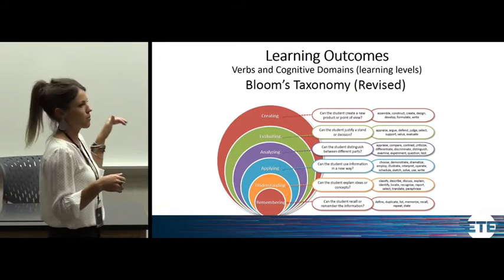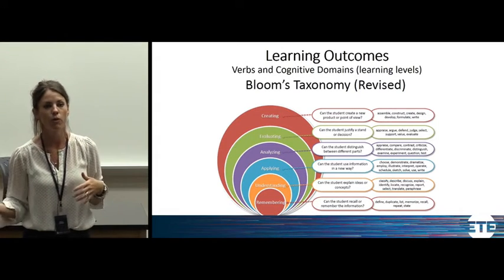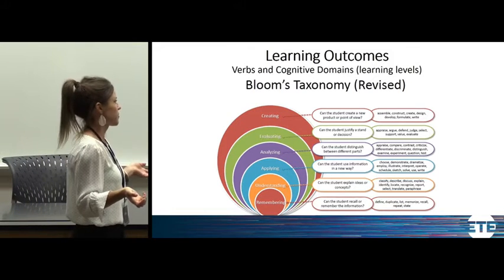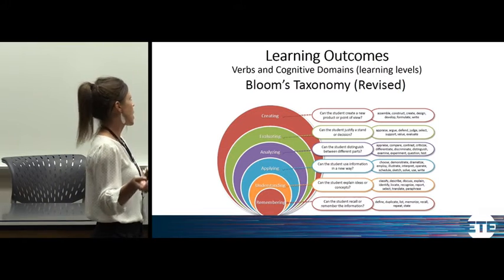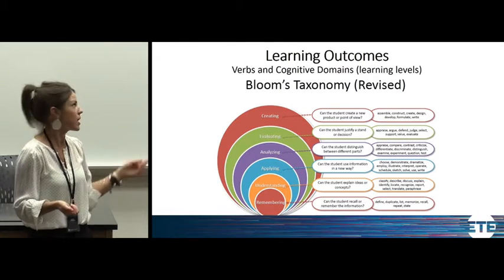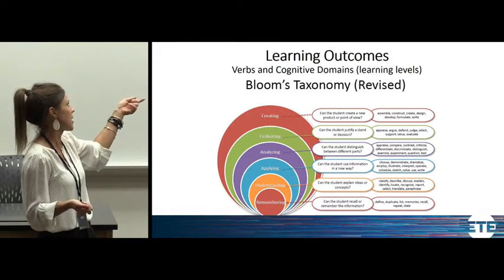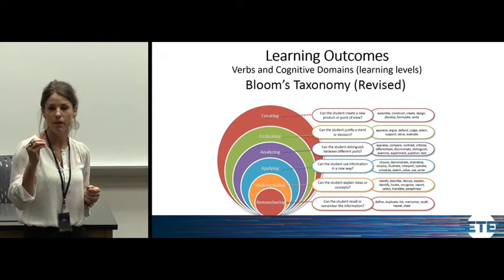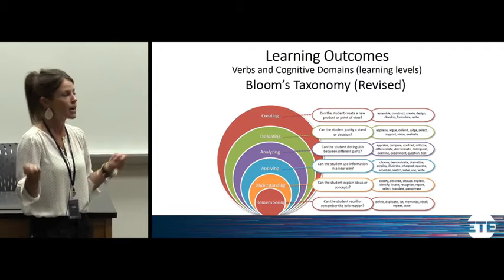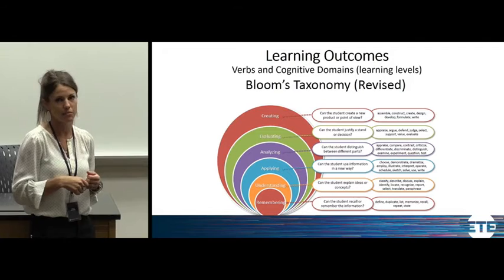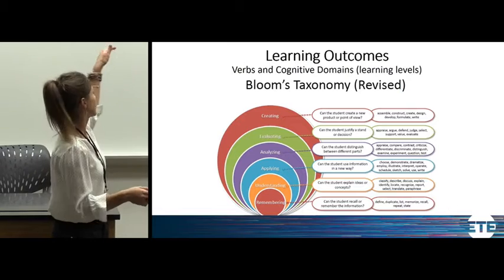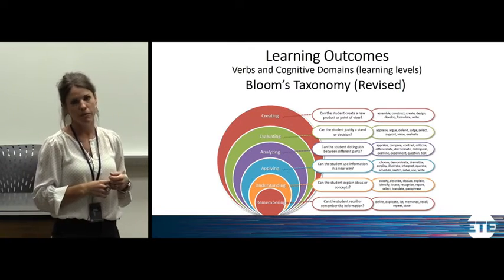Some of my courses will exist at the remembering and understanding levels — it's a 2000-level course when we're talking about equine reproduction. If this is probably the first time a student has ever looked at equine reproduction, then at the remembering cognitive level I'm talking about things like: they can define, duplicate, list, memorize, recall, repeat, state — those sorts of things. I pick a specific verb that's important both to the cognitive level I expect them to learn at and to how I assess them. I cannot teach at a remember level and then assess at an analyzing level — that wouldn't be fair to students.